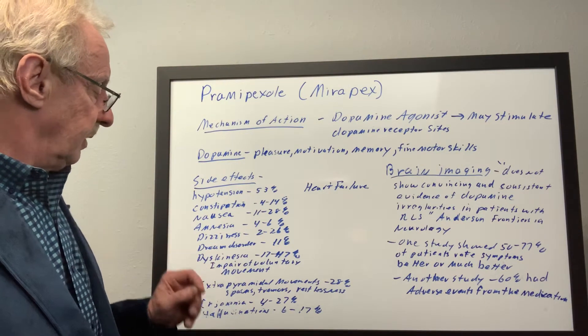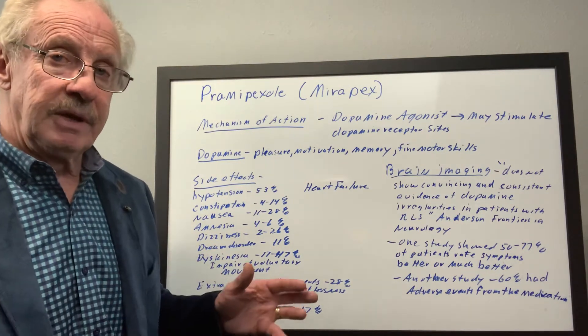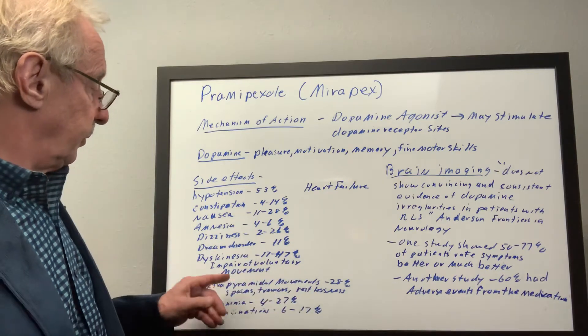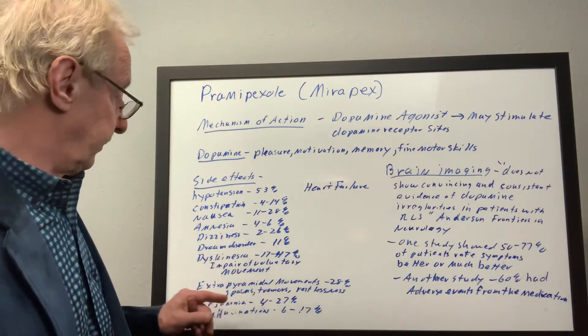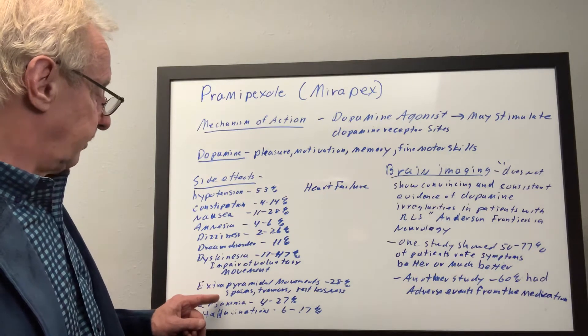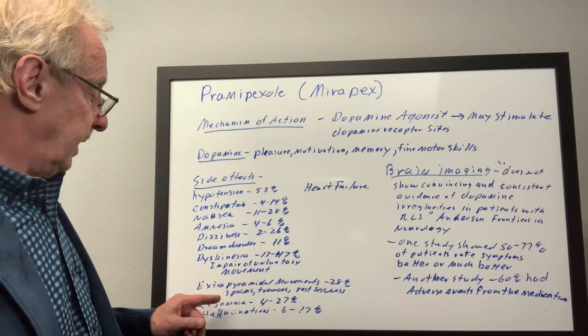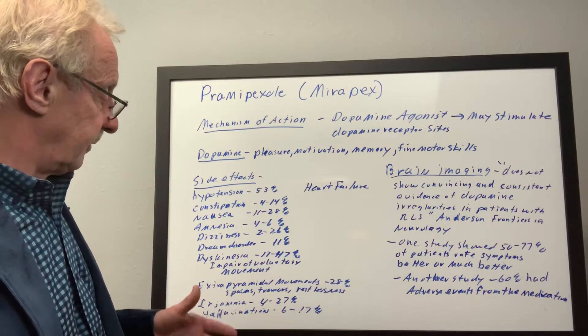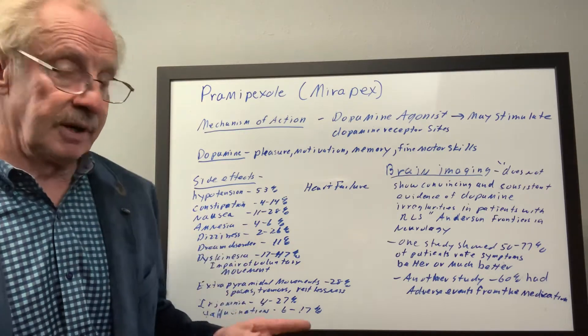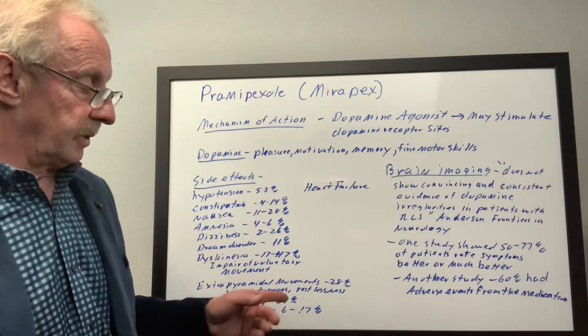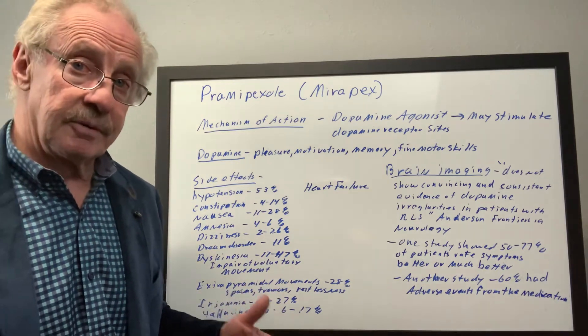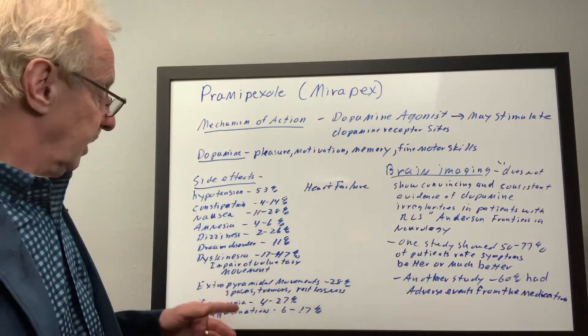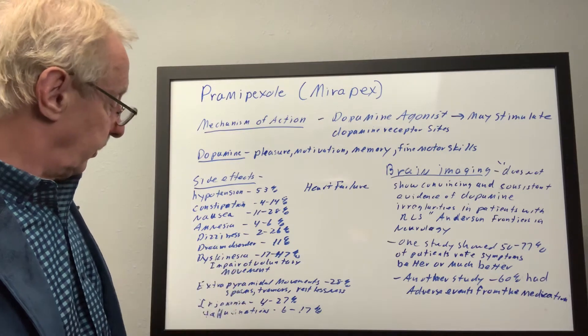...which means impairment of voluntary movement, which could be tremors or shaking of some sort - that would be 17% to 47%. That's pretty high. And then extrapyramidal movements, 28%, which would mean things such as spasms, tremors, restlessness. This last one I mentioned, 28%, is a common reason sometimes people jump out of drug studies because they have these extrapyramidal movement disorders.